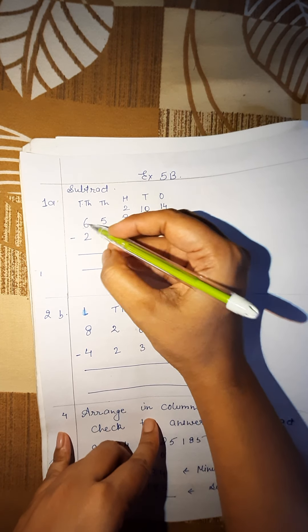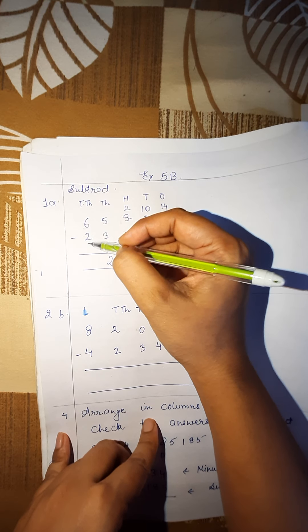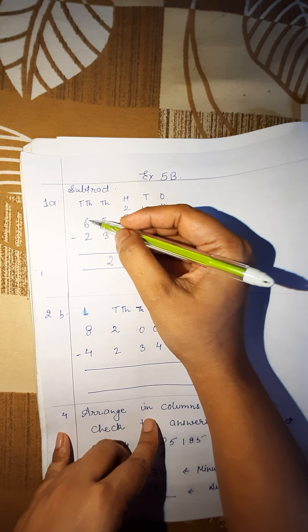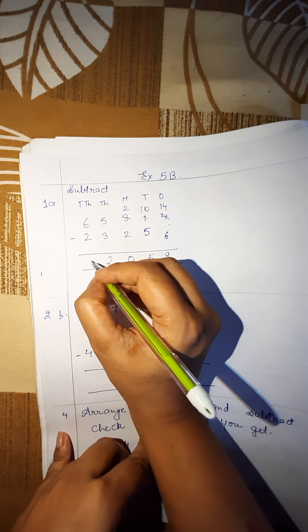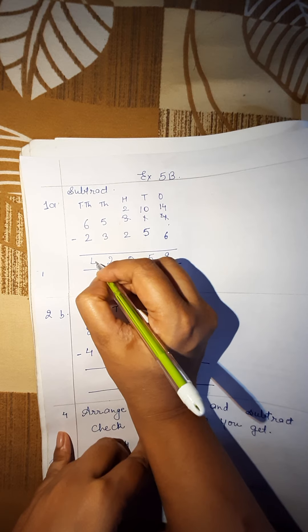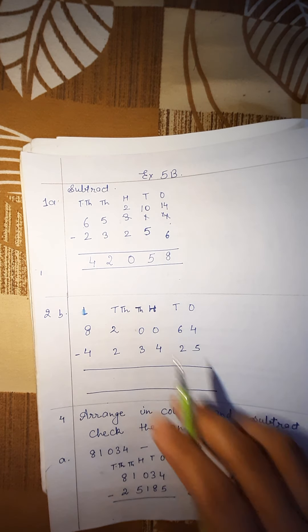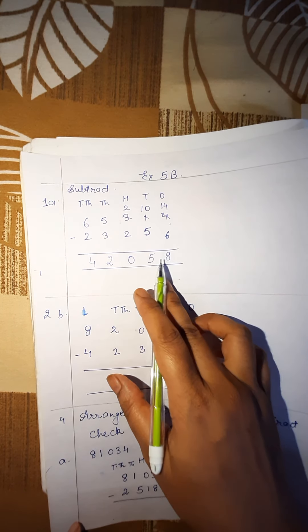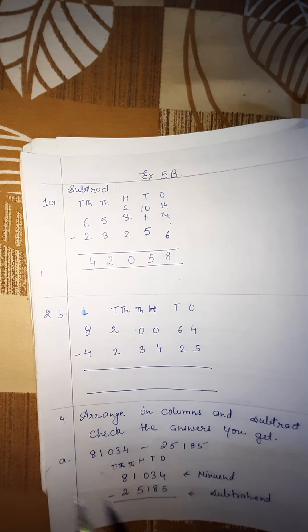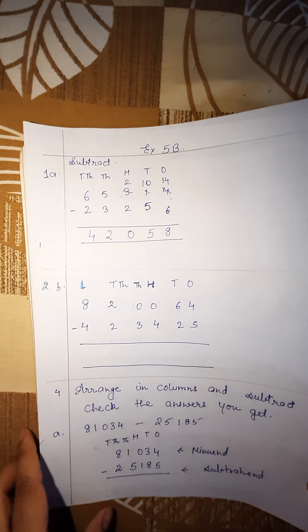Then we have at the 10,000's place 6 and 2. When we subtract 6 and 2, we will get 4. So your answer is 42,058. Okay, let's see the next one.